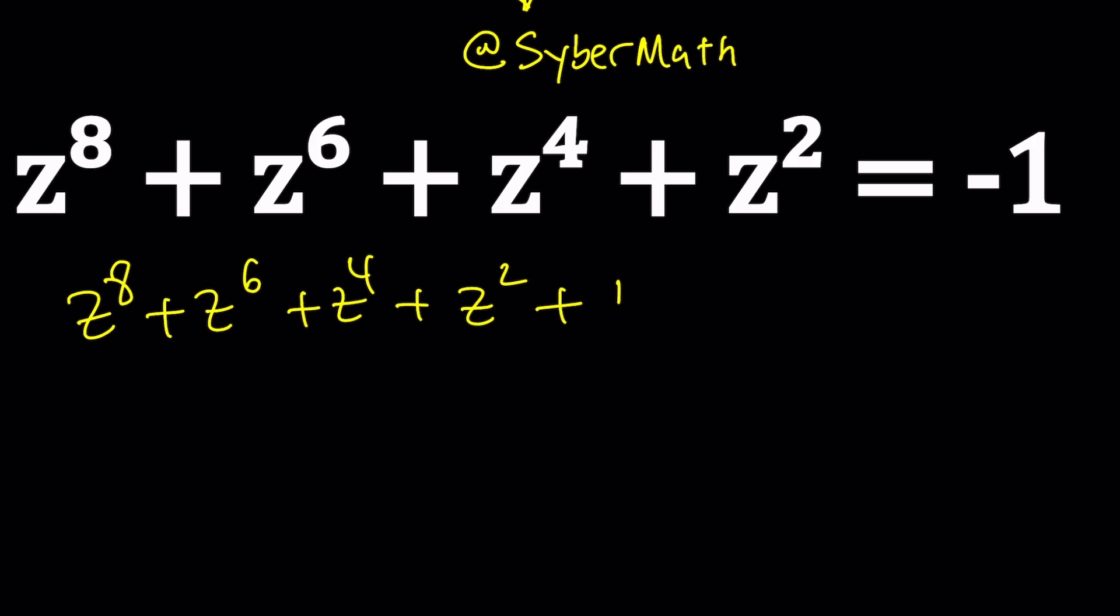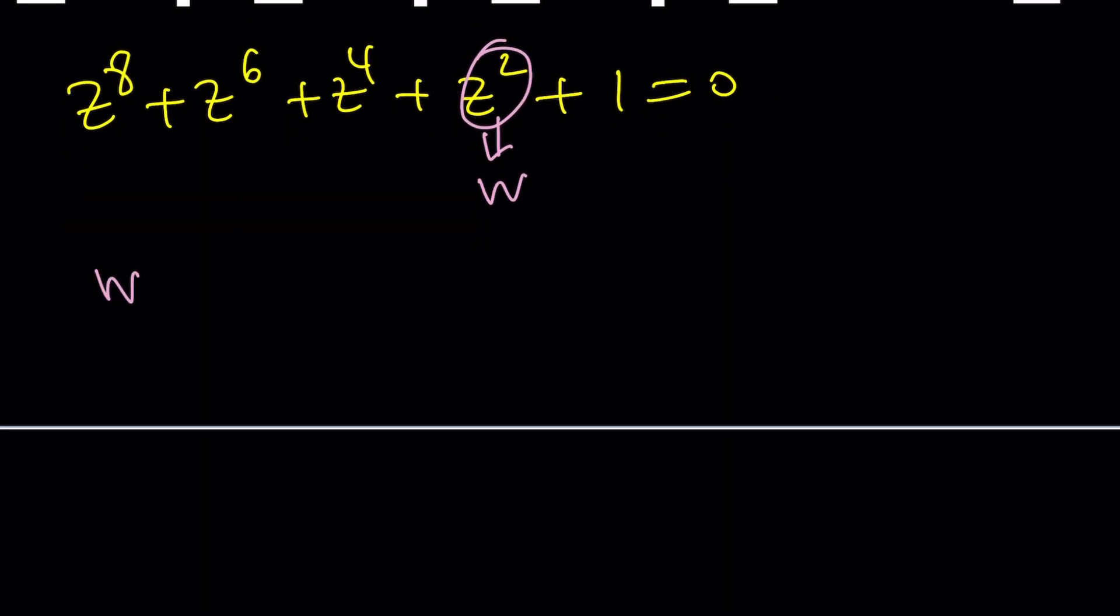And sorry about the way I write z's, that's how I write z's, otherwise they kind of look like twos or sometimes even something else. So now, since all powers are even, let's go ahead and set z squared equal to something. How about setting z squared equal to w? And then we get w^4 + w^3 + w^2 + w + 1 = 0.